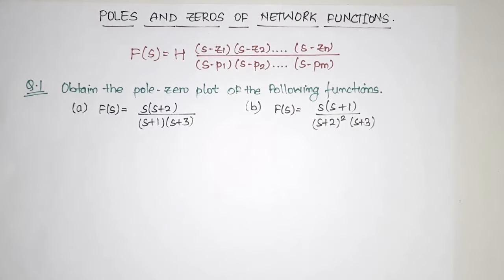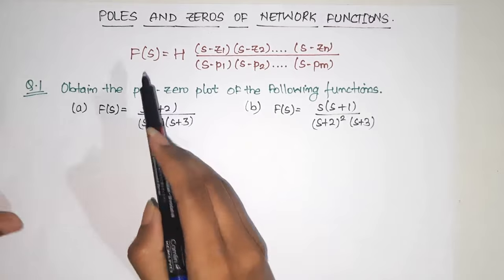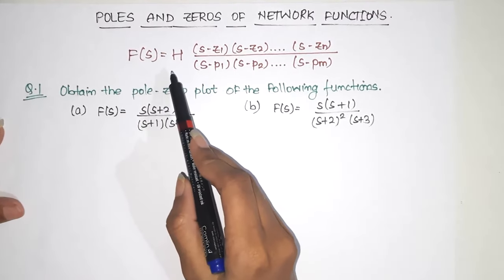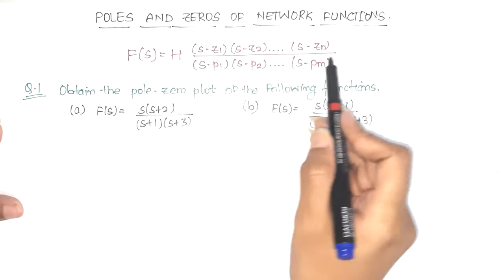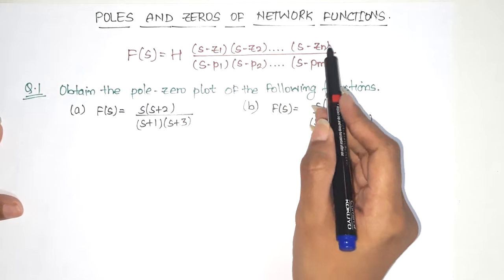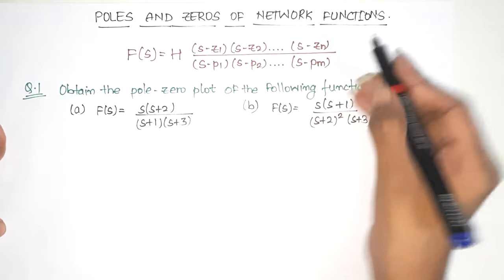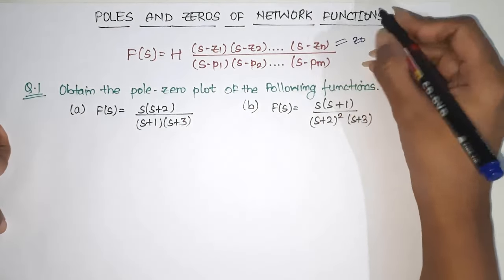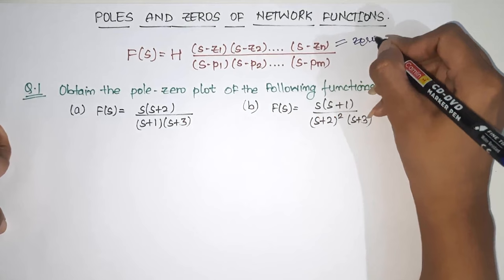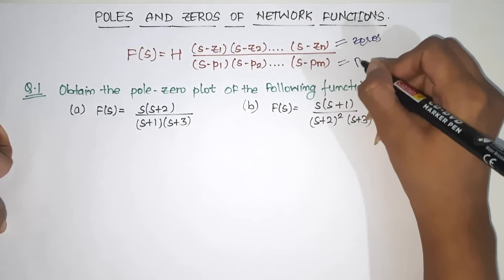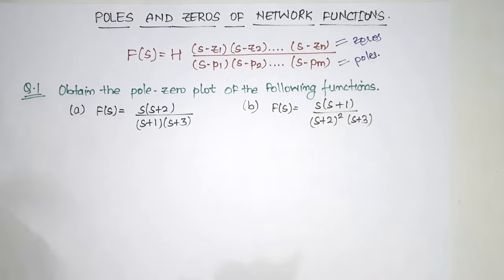Hello guys, welcome back. I am Dhruvi and today we will see the poles and zeros of network functions. We have a transfer function h, where the numerator gives us zeros and the denominator gives us poles, and we will graphically plot them. Let us start.